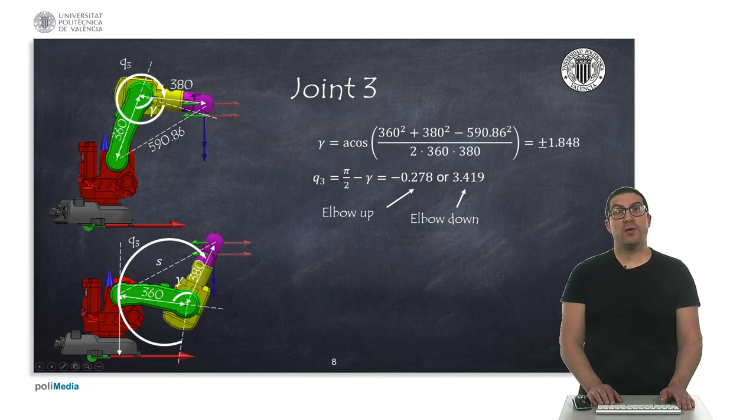For each configuration we can also obtain the value for the third joint q3. Again using the law of cosines we can compute the angle gamma in this case, with two possible values corresponding again to the elbow up and elbow down configurations.